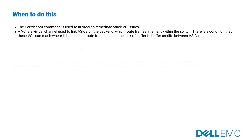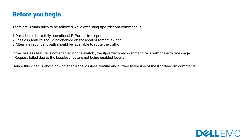When do we use this feature? The port decomm command is used in order to remediate stuck VC issues. A VC is a virtual channel used to link ASICs on the back end, which route the frames internally within the switch. There is a condition where these VCs can reach a state where they are unable to route frames due to the lack of buffers to buffer credits between ASICs.